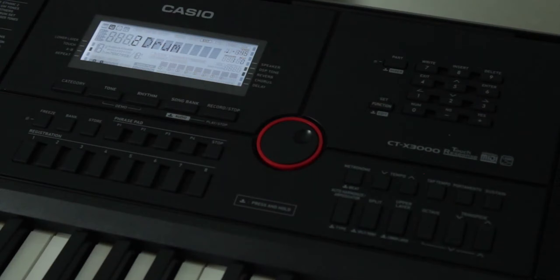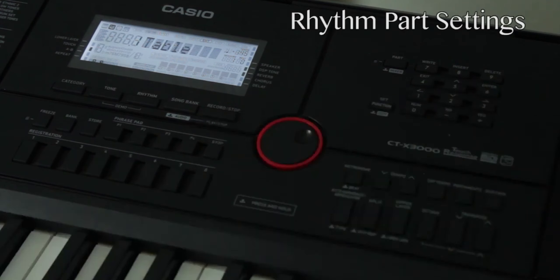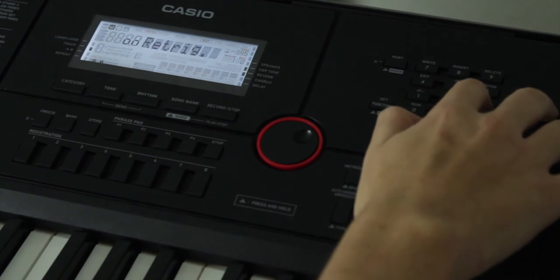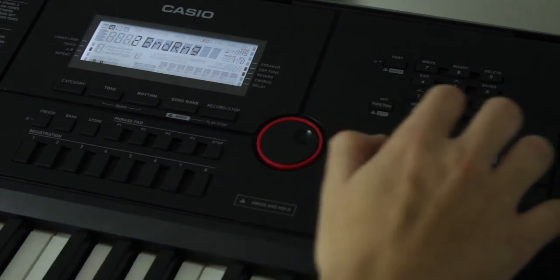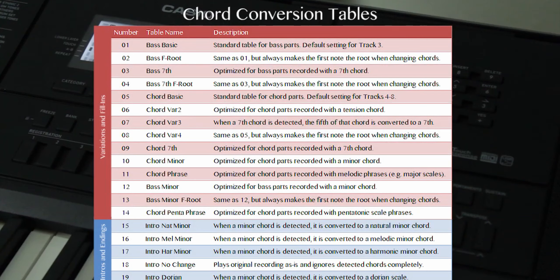Next, we have to configure the settings related to chord detection behavior for each track. Tracks one and two are percussion only, so they'll always behave the same regardless of the chords you play. Select one of the melodic tracks, hit registration 8, choose part and hit enter. You'll find five parameters: table, breakpoint, invert, retrigger, and bend range. Table refers to the chord conversion table — rhythm tracks are initially recorded in the key of C major but can be transposed to different keys by playing chords with your left hand. The chord conversion table determines how each part behaves during that transposition to keep the backing track sounding musically natural. There are nineteen different conversion tables to choose from, mostly optimized for bass or chord parts. The default settings work fine for most applications, but if you plan on using a wide range of chord voicings it's worth doing more research. A detailed list explaining each table can be found on page 87 of the manual.